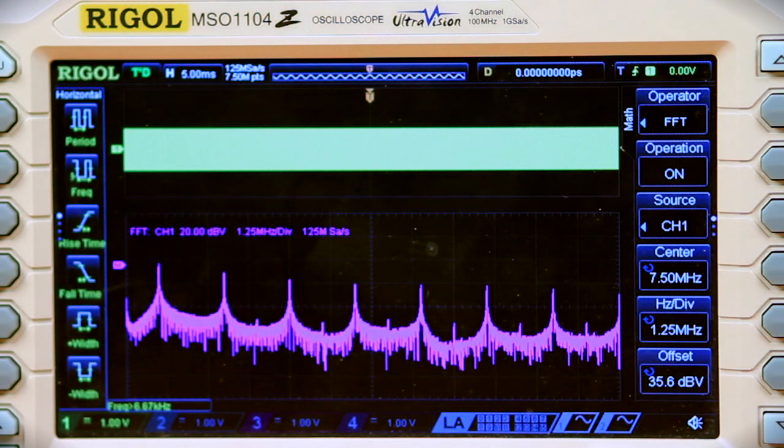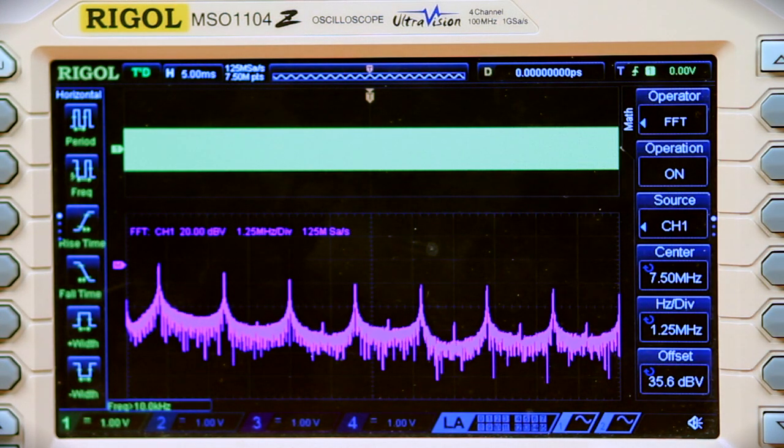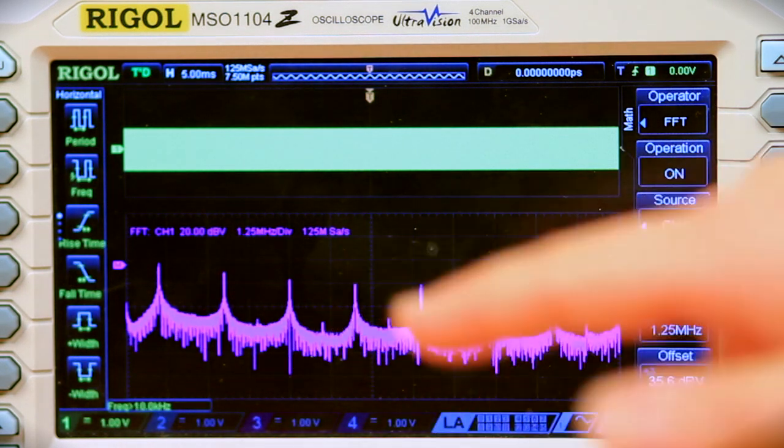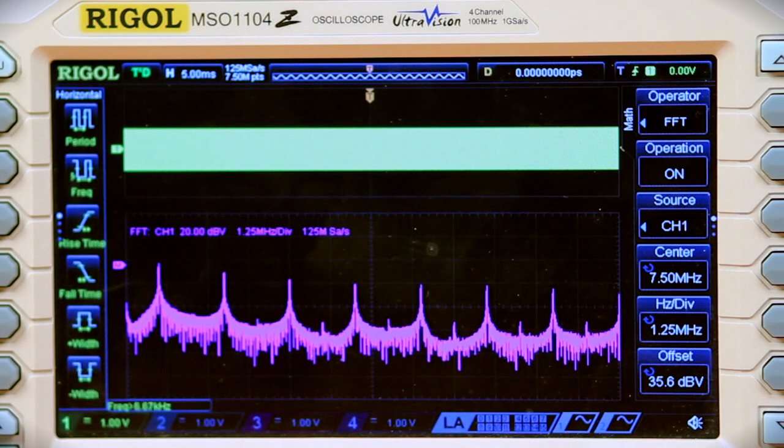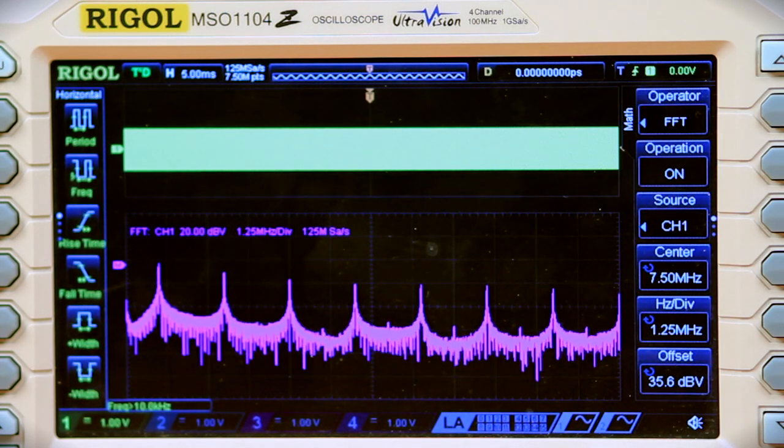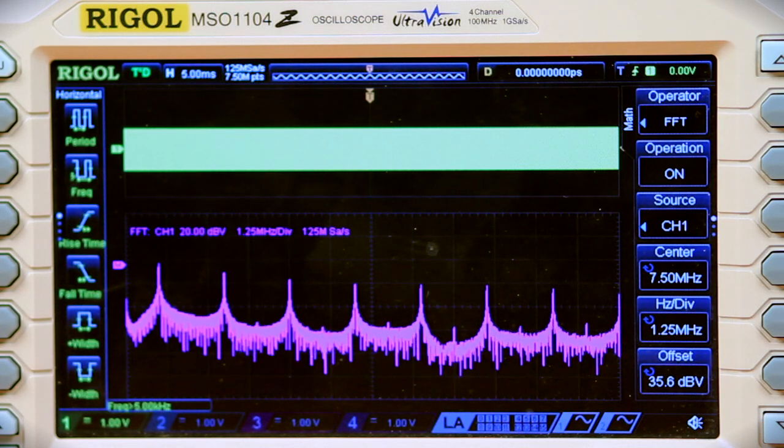Now let's move it over to a square wave. Now we can see all the odd harmonics: first, third, fifth, seventh, and further out. This gives us a look at what frequency components are in the signal beyond the primary.